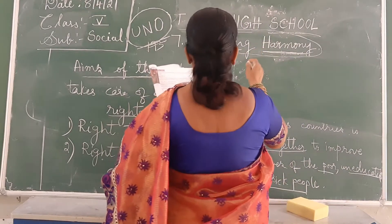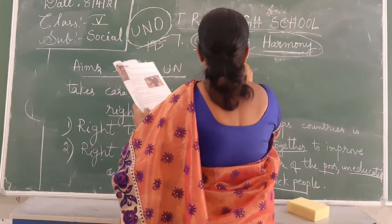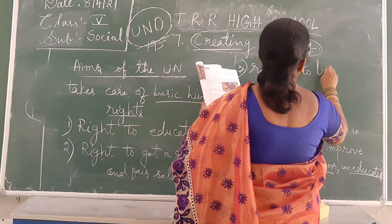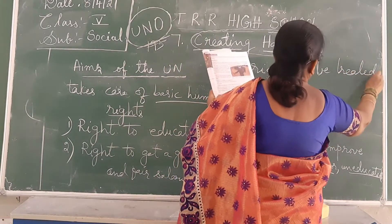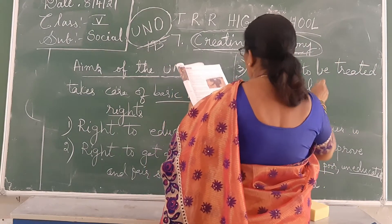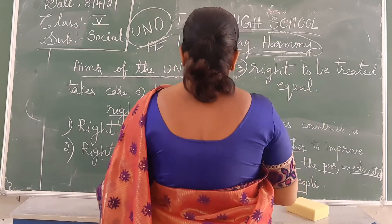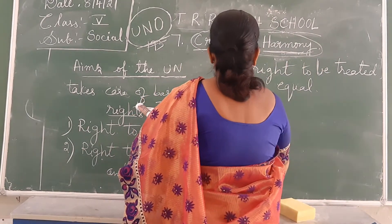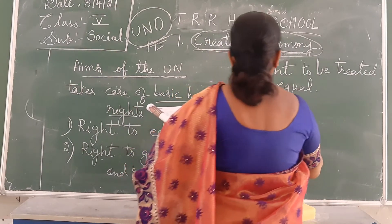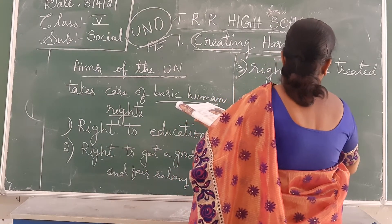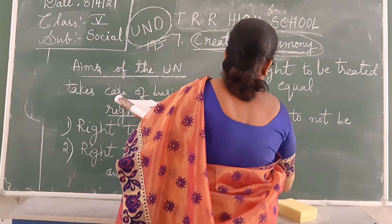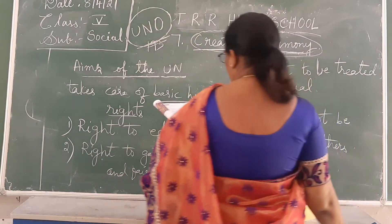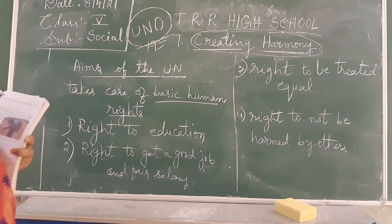Equality should be there — we have learned equality. That is what the UNO also says: right to be treated equally. Everyone are equal in the world. And right to not be harmed by others. I should not be harmed by others. These are some basic rights which are given by the UNO.